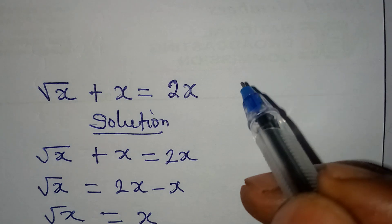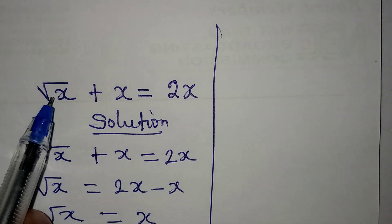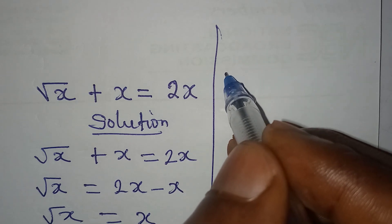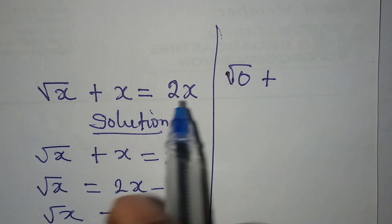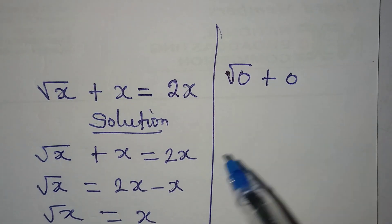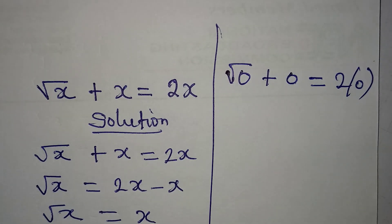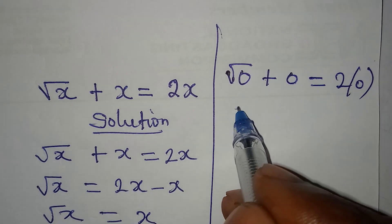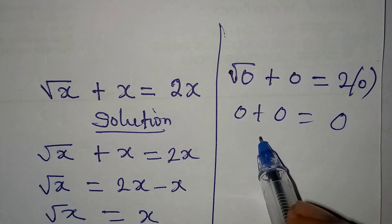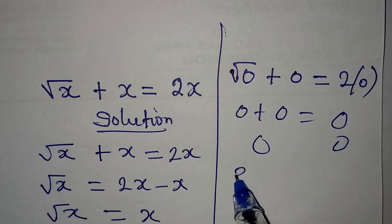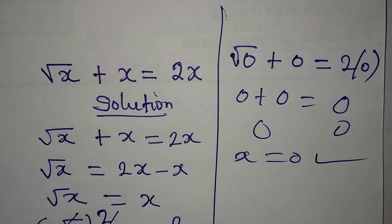So if I want to put in the value x is zero, right, this means I'm going to have square root of zero plus zero, because x is zero, everything is equal to two multiplied by zero. Now square root of zero is zero plus zero, and then two times zero is zero. So zero, meaning that x equal to zero satisfies the equation.